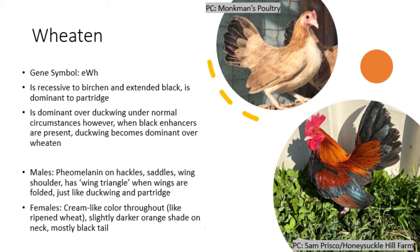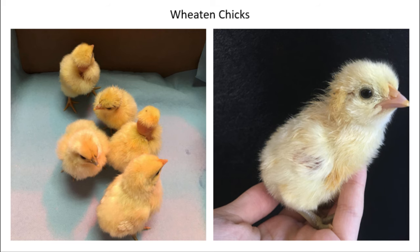Wheaten males look incredibly similar, if not identical, to Duckwing and Partridge males. However, the hens look very different: Wheaten hens have a cream-like color throughout their body with a slightly darker orange on their neck and black tail feathers, with the cream color caused by autosomal red. Wheaten chicks are entirely yellow and generally have no other markings, making them very distinct from the other chick down types.